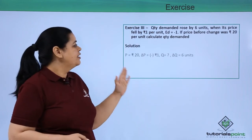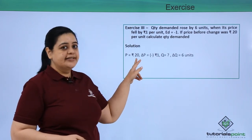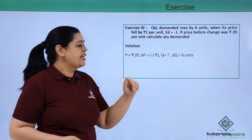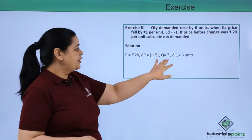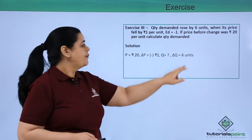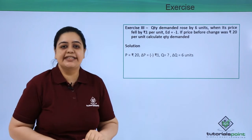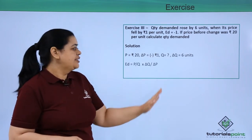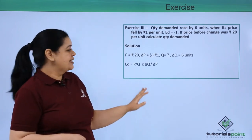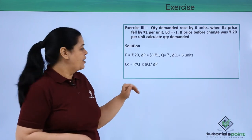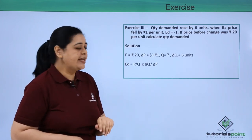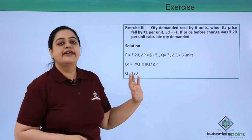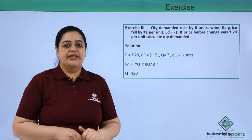Very simple - we already have price as 20, ΔP = -1, Q is not given but ΔQ is given as 6 units. Just substitute the numbers in this formula: (P/Q) × (ΔQ/ΔP). The answer is 120 units.